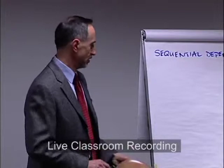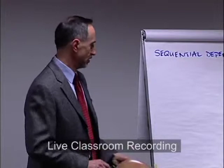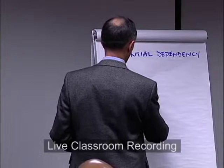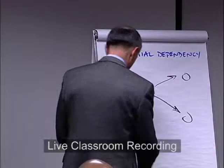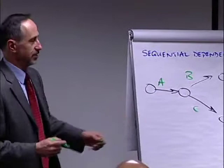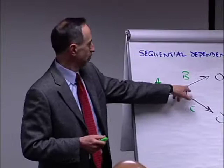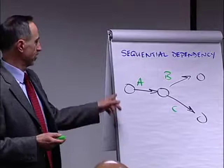I'll just draw a real simple network diagram for you. It looks like this — here's a very simple project. It consists of three activities; I'll just call them A, B, and C. Just by virtue of the way I've drawn this diagram, I've depicted that we must first complete Task A before we can undertake either B or C. For example, in the build a house project, we've got to pour the foundation before we can put the roof on or do the electrical and mechanical things. You can't do them in reverse order.